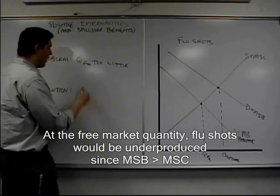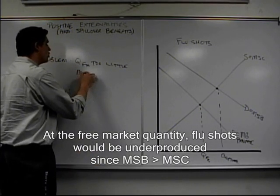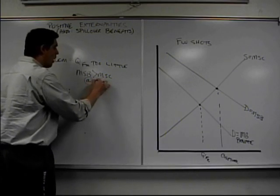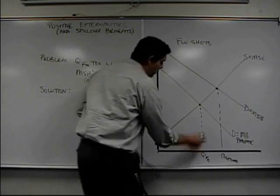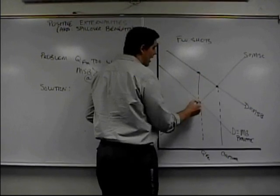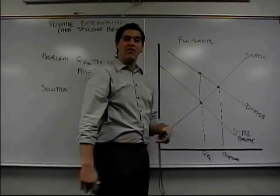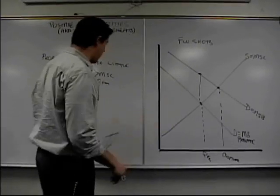And the reason I know that is because the marginal social benefit is greater than the marginal social cost at quantity free market. At this quantity, the benefit to society is greater than the cost. Society wants more flu shots when you factor in those external benefits. So that's the problem.